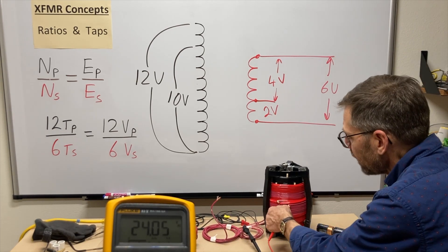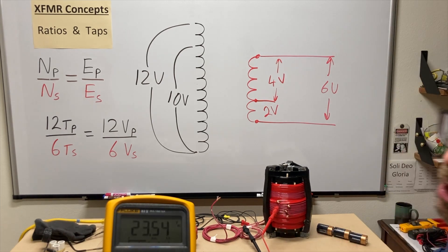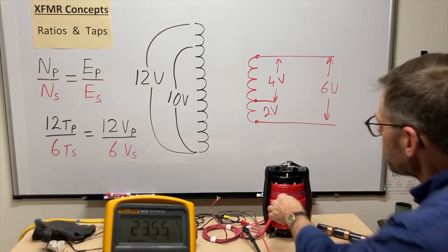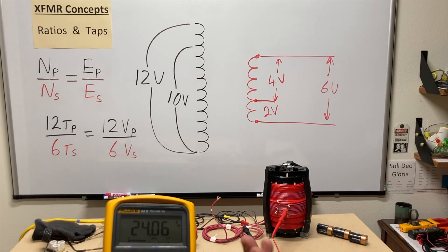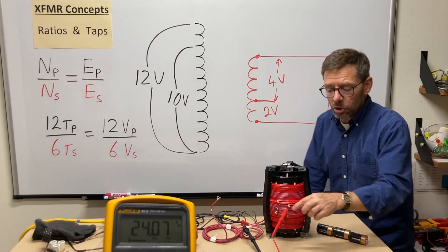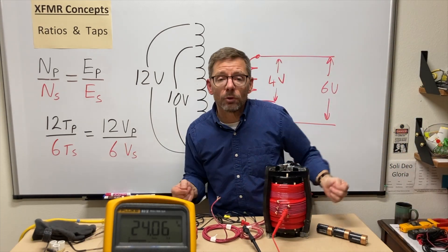Just a hair over. If I went down here, no, I'd be down too low. So 24.05, that's pretty close. You don't often get it that close. Sure, that's what I would pick. I got my 24 volts going out.